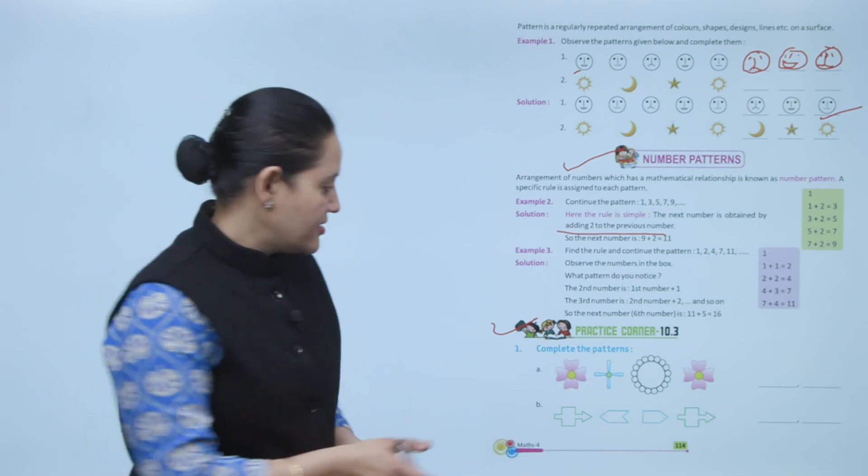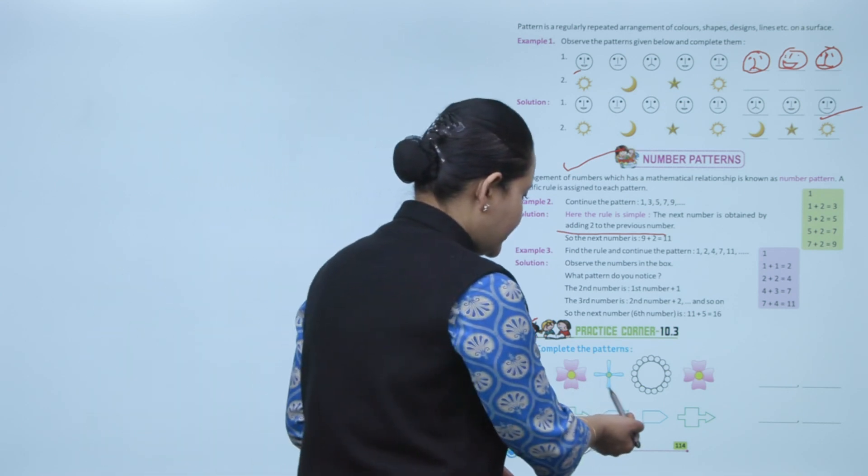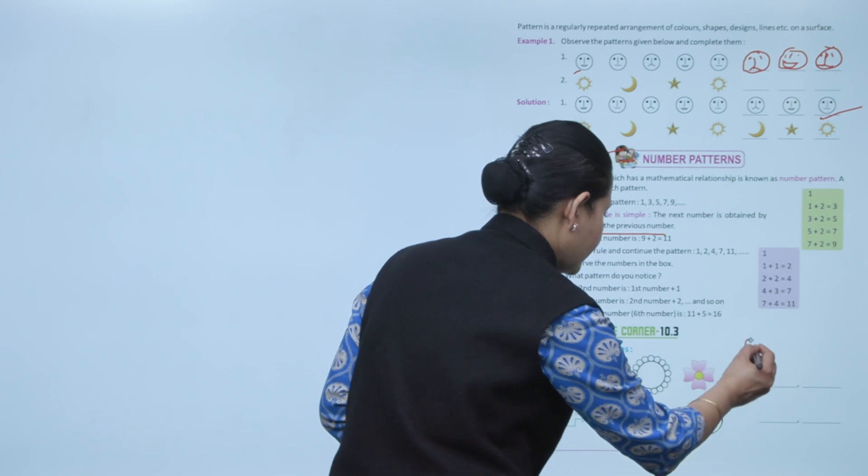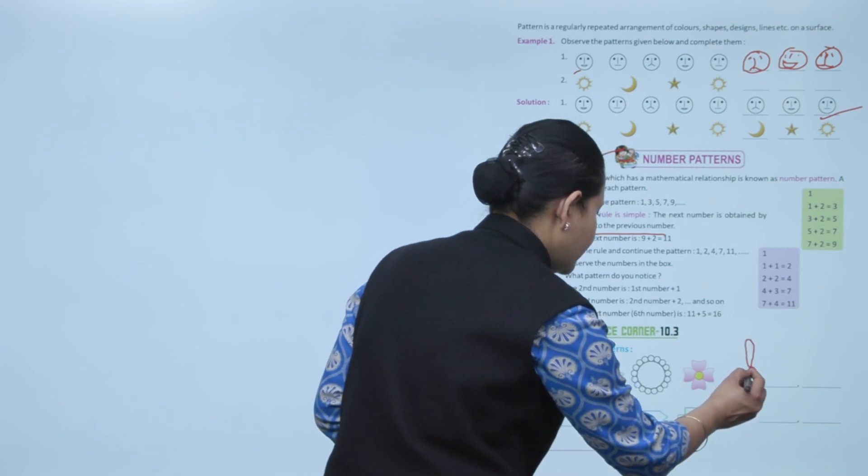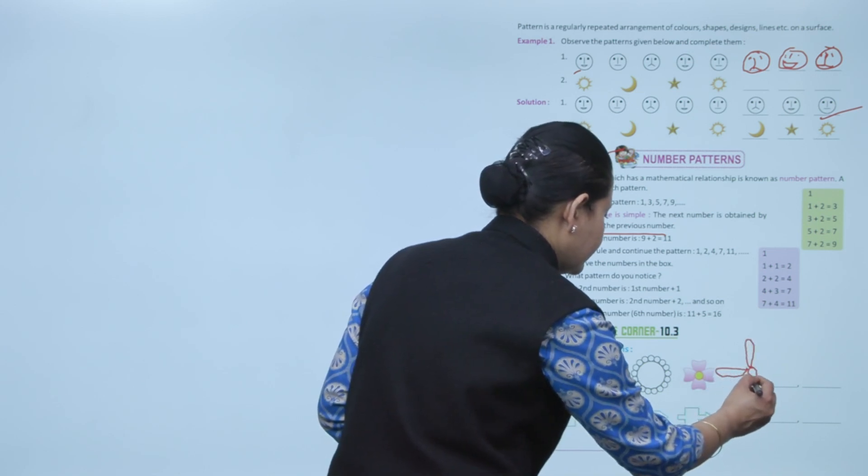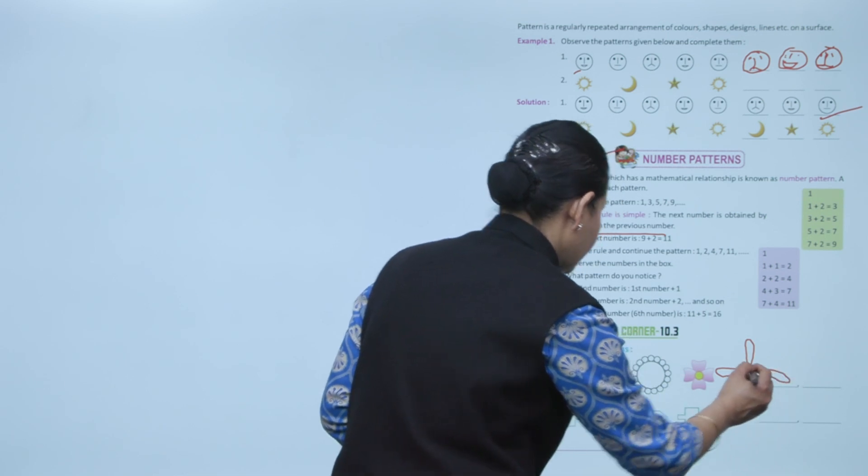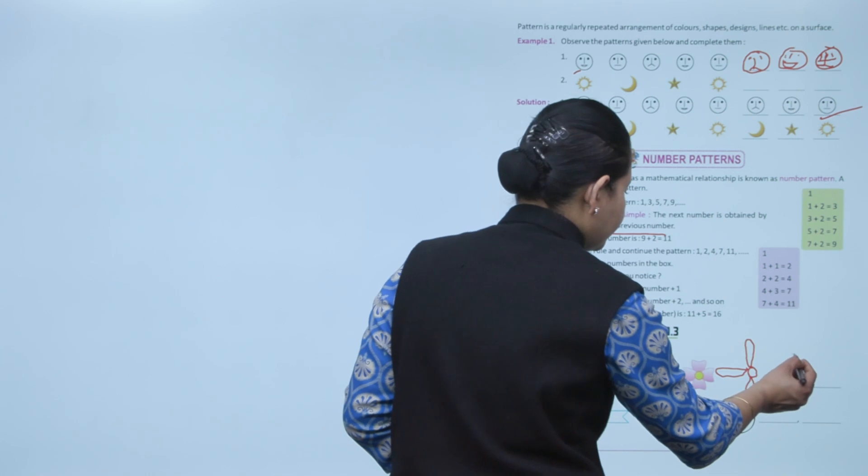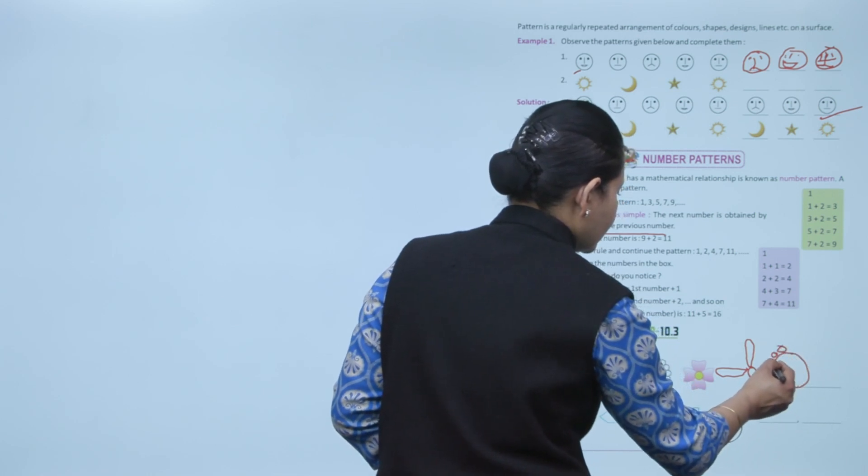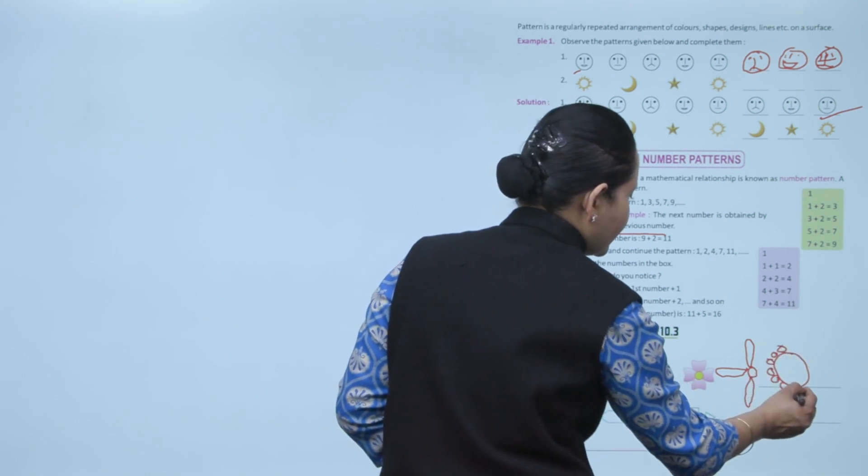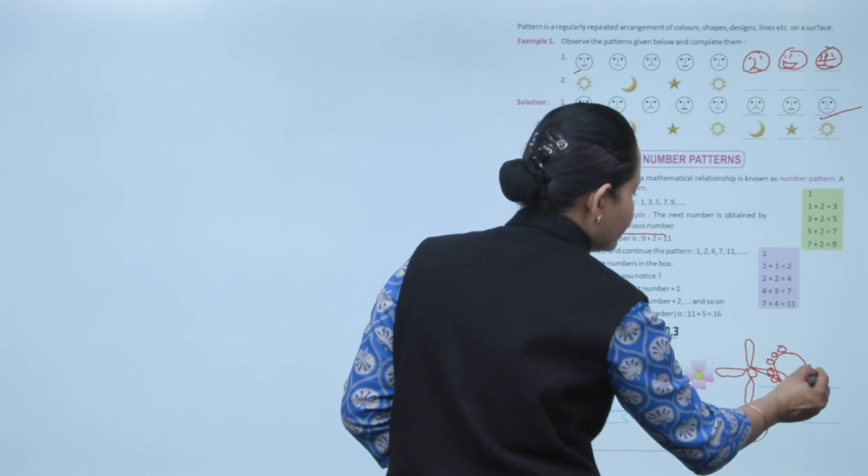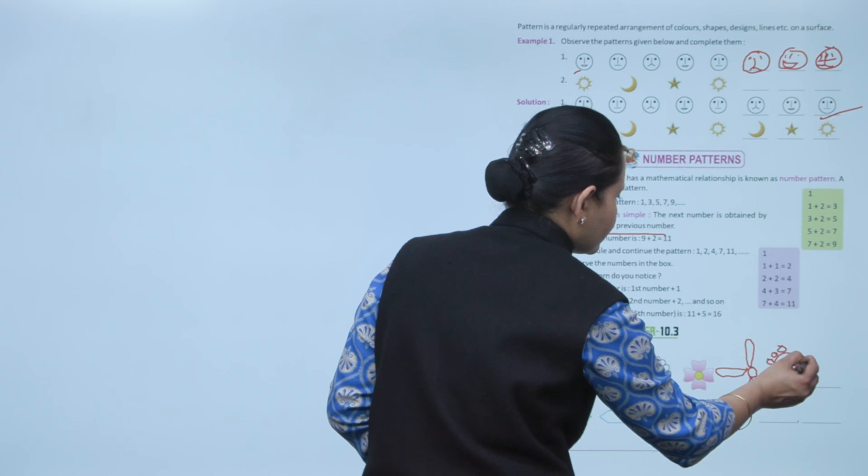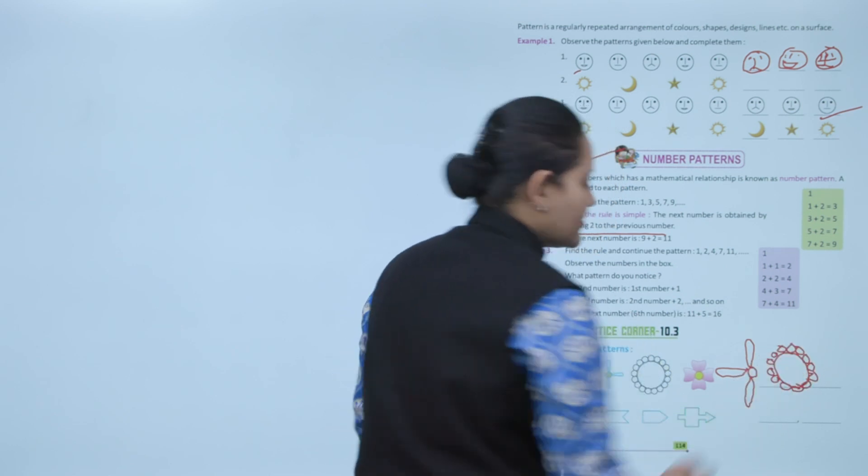Next is Practice Corner 10.3. Complete the pattern: here first flower, then this, then this flower, then a fan-like shape, then again flower. This is the pattern following here.